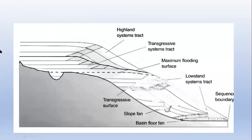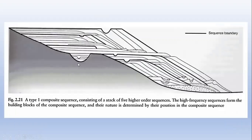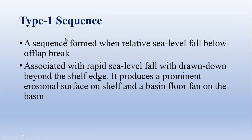This is a typical diagram of a sequence, specifically a type 1 sequence. The dark line represents the sequence boundary and an unconformity. These are erosional scars, and at the top of this sequence is another sequence boundary. Such a succession of strata covered at the base as well as at the top by a sequence boundary is termed a sequence in sequence stratigraphy. There are two major types of sequence: type 1 and type 2.